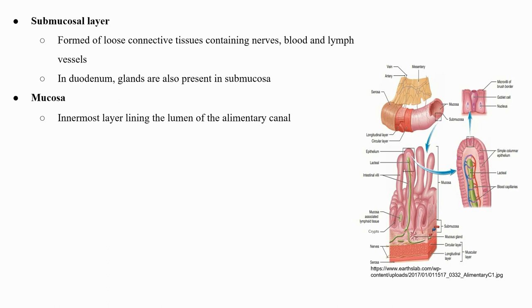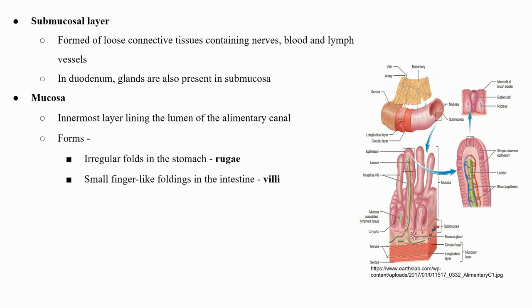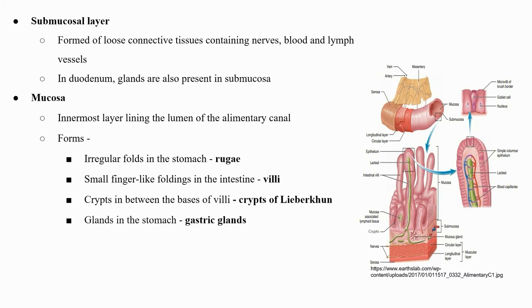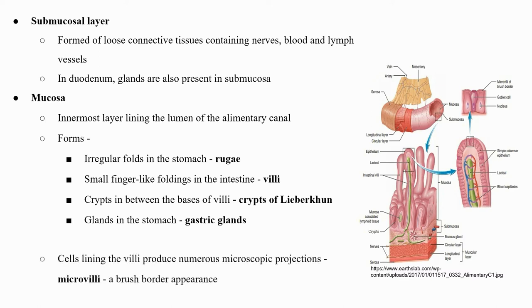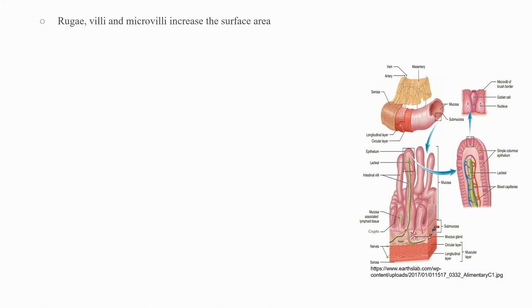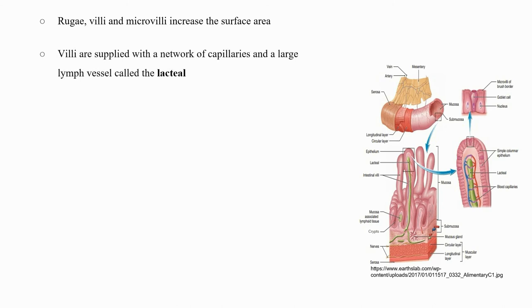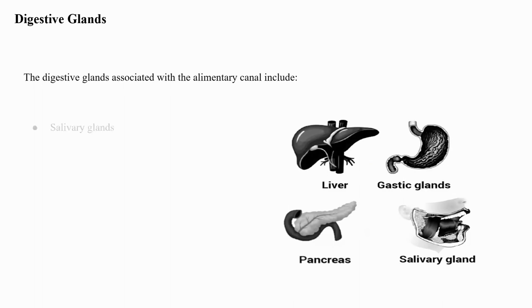Mucosa is the innermost layer lining the lumen of the alimentary canal. This layer forms irregular folds called rugae in the stomach and small finger-like foldings called villi in the small intestine. It forms crypts between the bases of villi called crypts of Lieberkühn, and also forms gastric glands in the stomach. The cells lining the villi produce numerous microscopic projections called microvilli, giving a brush border appearance. Rugae, villi, and microvilli enormously increase the surface area. Villi are supplied with a network of capillaries and a large lymph vessel called the lacteal. Mucosal epithelium has goblet cells which secrete mucus that helps in lubrication.